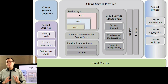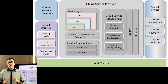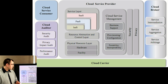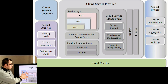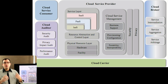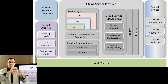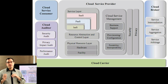So real quick, a few of the parts of cloud computing as defined by NIST. NIST has a service layer, which is where most people interact with the cloud. The service layer is really about getting something as a service — software as a service, platform as a service, and infrastructure as a service.